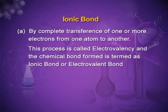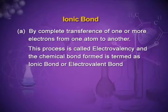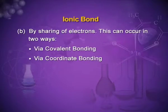Ionic bond is formed by the complete transference of one or more electrons from one atom to another. This process is called electrovalency, and the chemical bond formed is termed the ionic bond or electrovalent bond. By sharing of electrons, a covalent bond is formed. When one electron each is shared, it is a normal covalent bond. But in a special type of sharing, when both electrons are contributed by one atom, it is a coordinate bond — a special type of covalent bond.